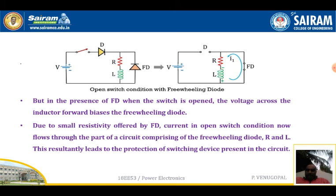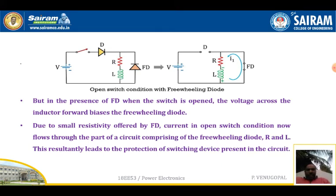When the switch is opened in the presence of the freewheeling diode, the voltage across the inductor forward biases the freewheeling diode. Due to the small resistivity offered by the freewheeling diode, current in the open switch condition now flows through the part of the circuit comprising the freewheeling diode. This resultantly leads to the protection of the switching device — the freewheeling diode protects the circuit from damage.